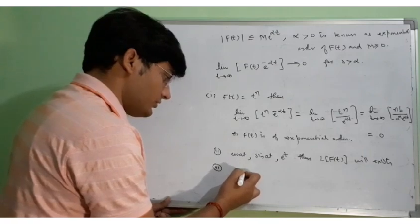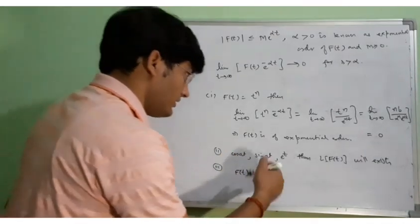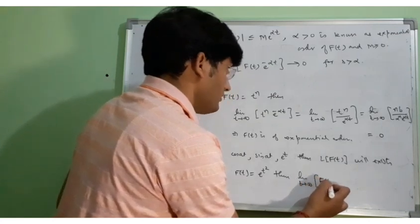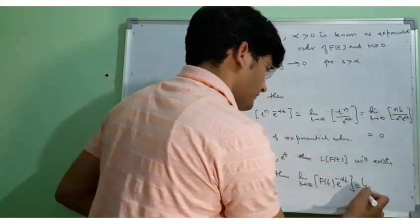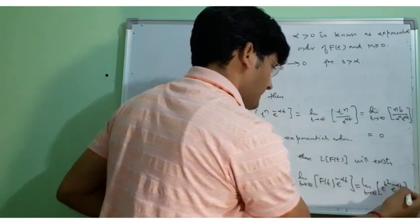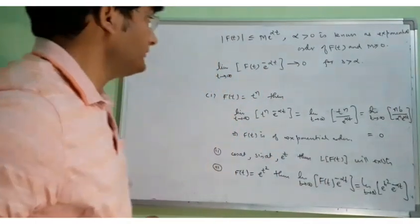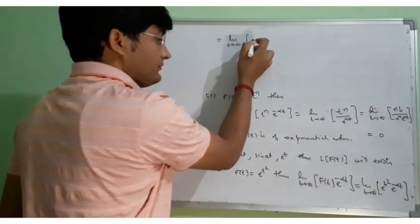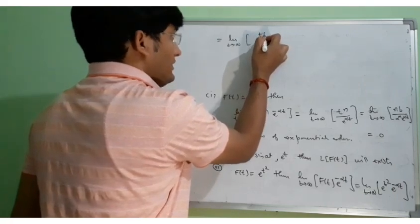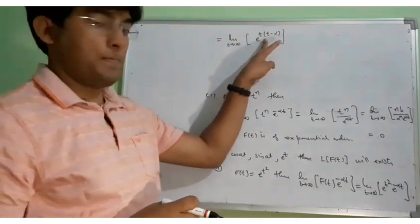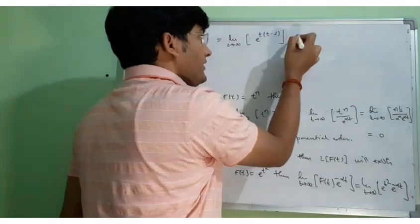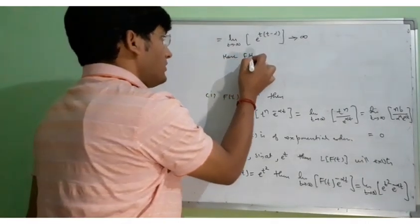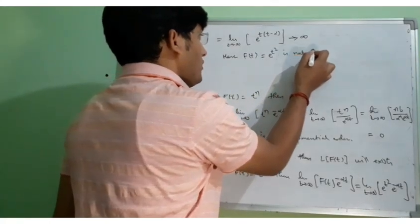Now consider another example: if F(t) is equal to e to the power t squared, let us see what happens. The limit as t tends to infinity of F(t) times e to the power minus alpha t equals e to the power t squared times e to the power minus alpha t. As t tends to infinity, this will always tend to infinity. Since this limit is not finite, we say that F(t) = e to the power t squared is not of exponential order.